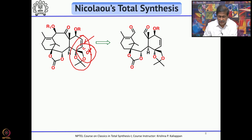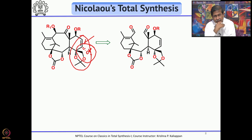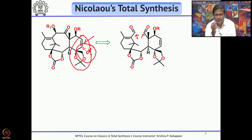The 8-membered ring can be obtained by the well-known McMurry coupling reaction. If you have a dialdehyde, under McMurry coupling it can give a diol. Once you have the diol, you can differentiate the two alcohols and oxidize one of them. So the precursor for this keto-alcohol is the dialdehyde.